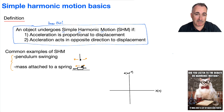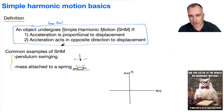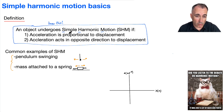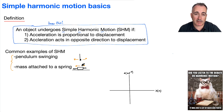Same with this mass — if I displace it to the right, the springs are going to want to move it to the left. And if I displace it to the left, the springs are going to want to make it move to the right. The acceleration is proportional to displacement — that just means the more I push it to the right, the more force there is and therefore the more acceleration. If I move it five units to the right, the acceleration is five units as well.